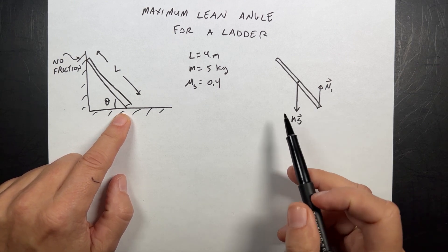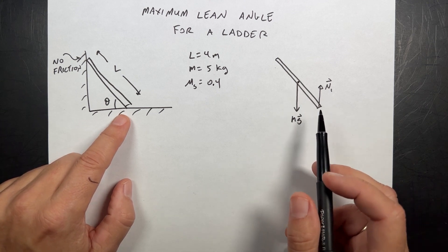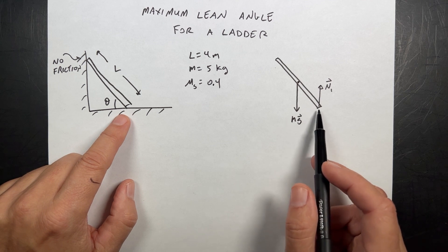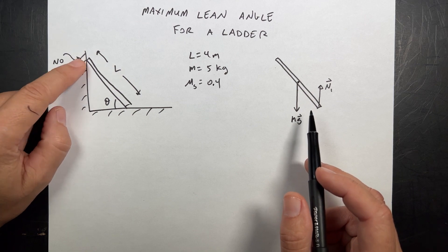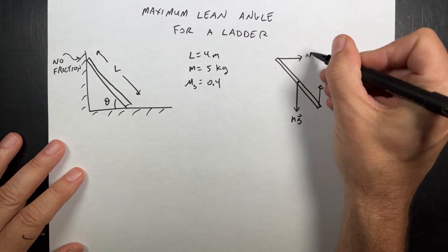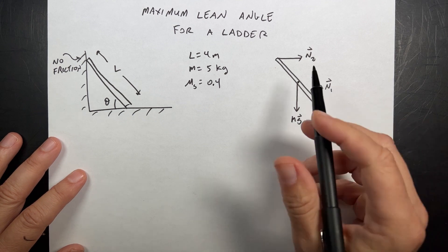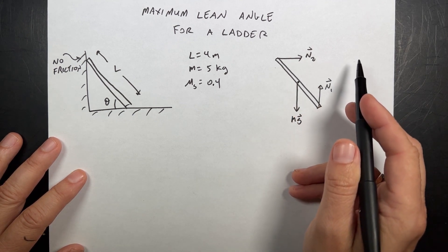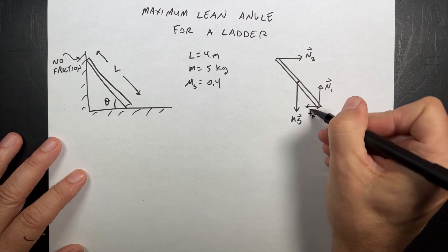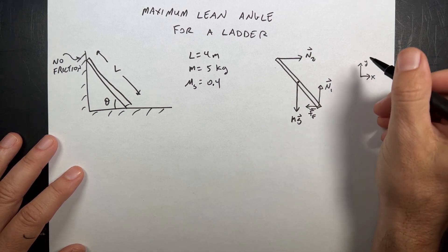Obviously those two forces alone can't keep it in rotational equilibrium, because they act at different locations. So I need another normal force from the wall — since there's no friction there, it pushes perpendicular to the vertical surface, meaning horizontally. I'll call that N2. And if N2 pushes in the positive x direction, I need a force in the negative x direction — that's the friction force f at the base. Setting up coordinates: x horizontal, y vertical.